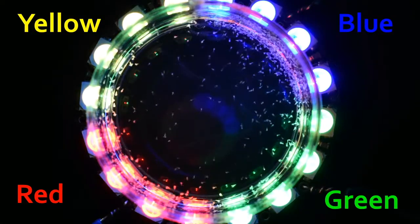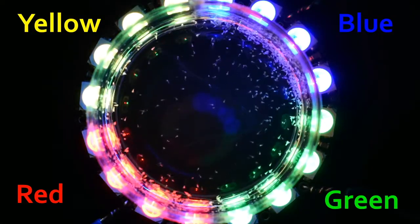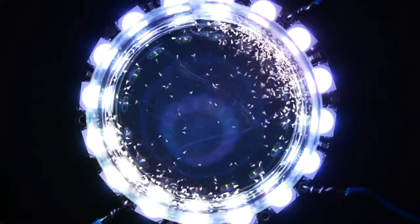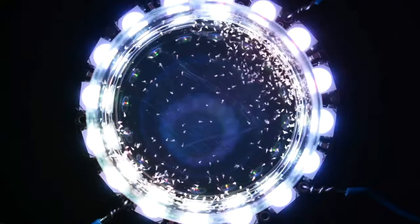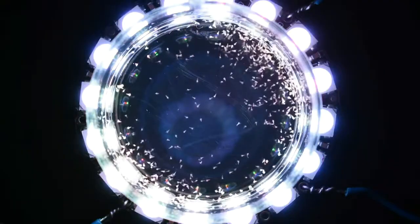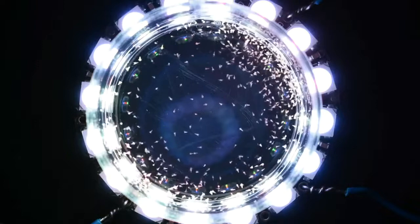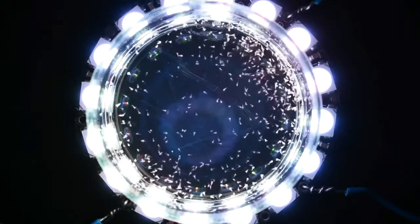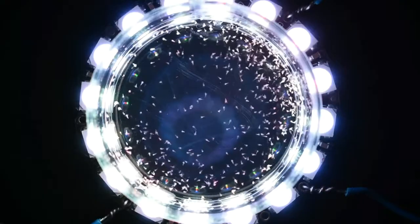Are they swimming towards one colour more than another? How do we know it's the colour and not the place in the dish they are moving towards?